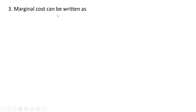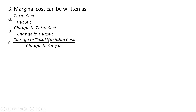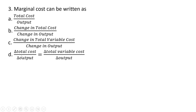Marginal cost can be written as — one option would be average total cost, that's incorrect. Answer choice B is correct: the change in total cost divided by the change in output. The change in total variable cost divided by the change in output is also correct. Answer choice D is also correct in shorthand notation — delta means change in, so change in total cost divided by change in output, which also equals the change in total variable cost divided by the change in output. Answer choices B, C, and D are correct.